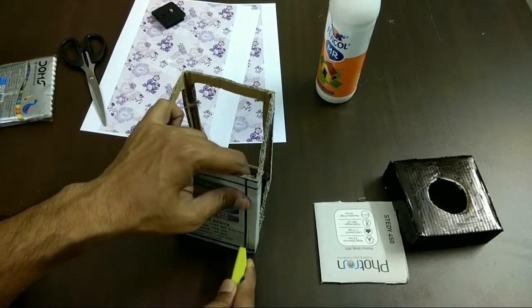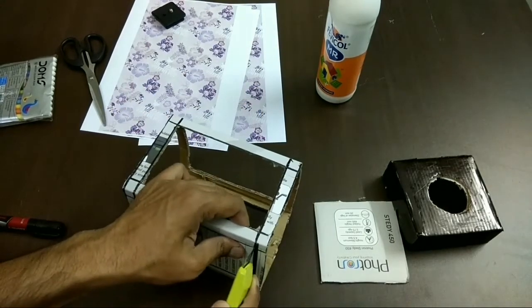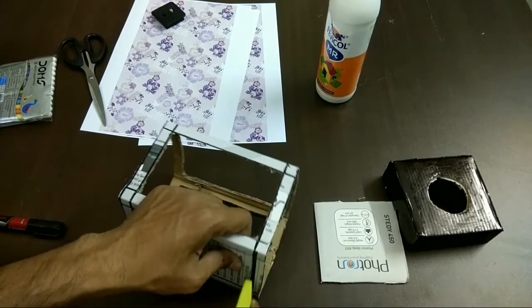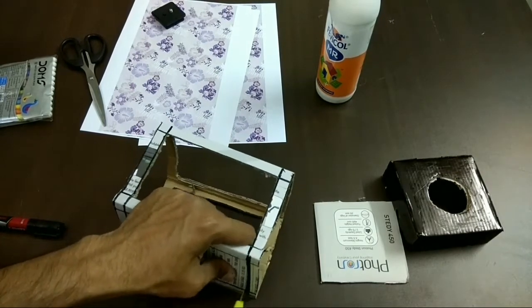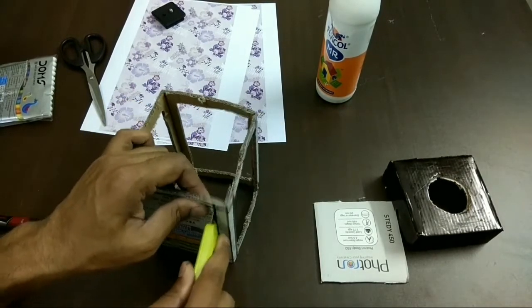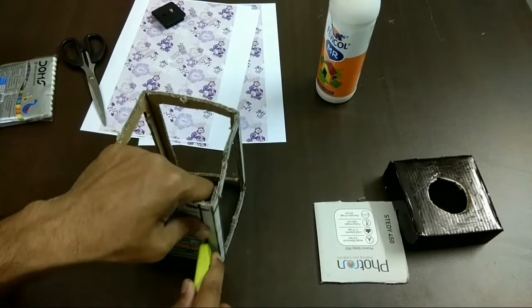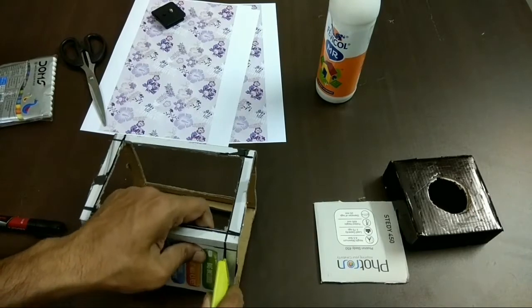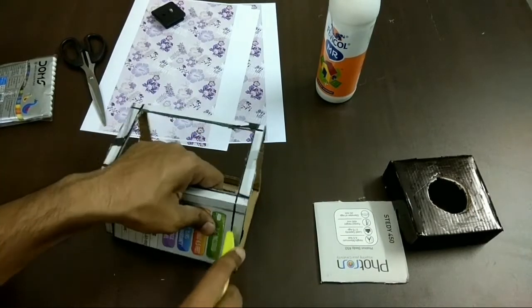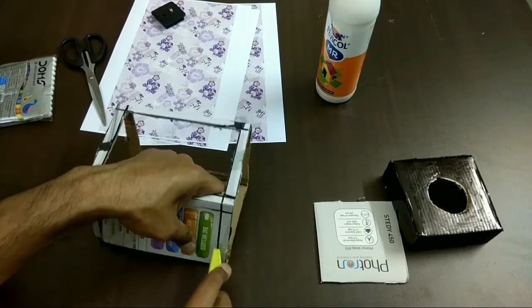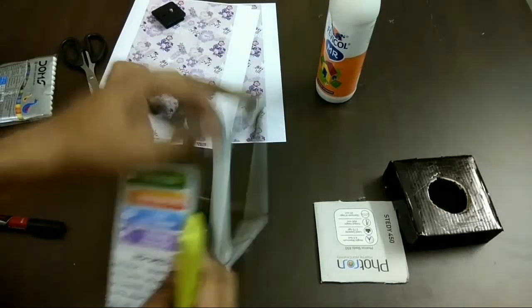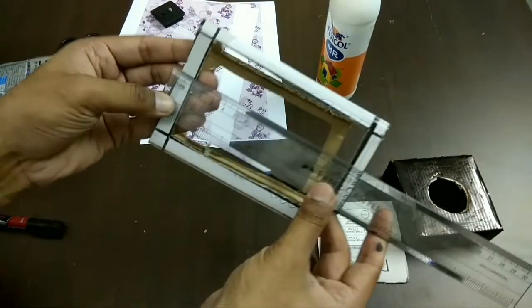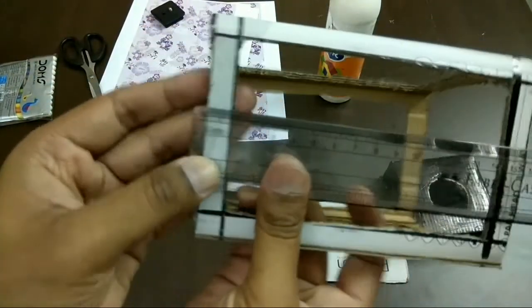I am using this paper knife. This part would serve as the top part of the lamp. So once you are done cutting all the 4 sides, the top part of the lamp would look like this. See it's 1 cm from all the sides.